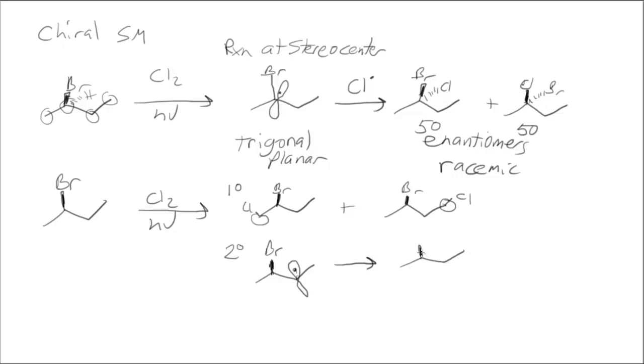But now the bromine doesn't change in each molecule. So that one the chlorine attack from the back and this one the chlorine attack from the front. Now if I look at the difference between these two molecules, the bromine is in the same configuration, the chlorine is switched. So these two molecules are diastereomers. The stereocenter is not affected in that part of the reaction.